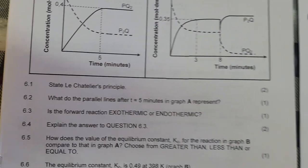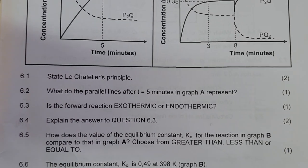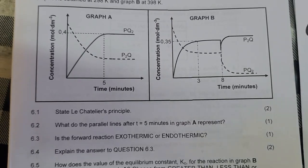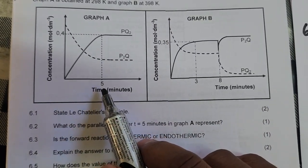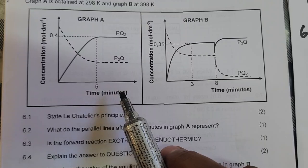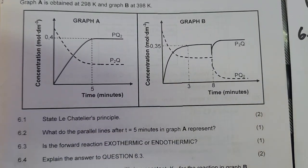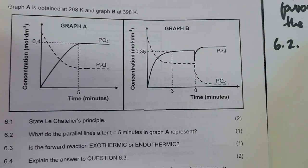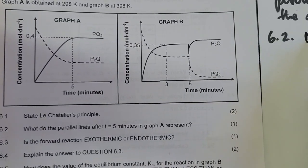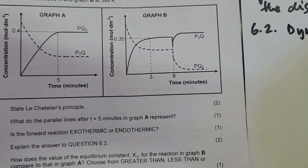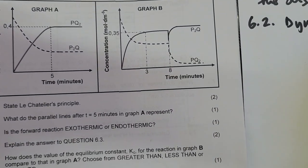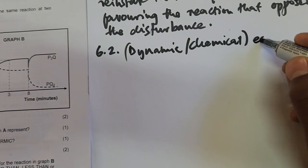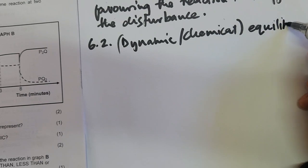6.2: What do the parallel lines after the disturbance at five minutes in graph A represent? The concentration of both reactants and products remains the same, therefore the parallel lines represent a dynamic — or chemical — equilibrium.